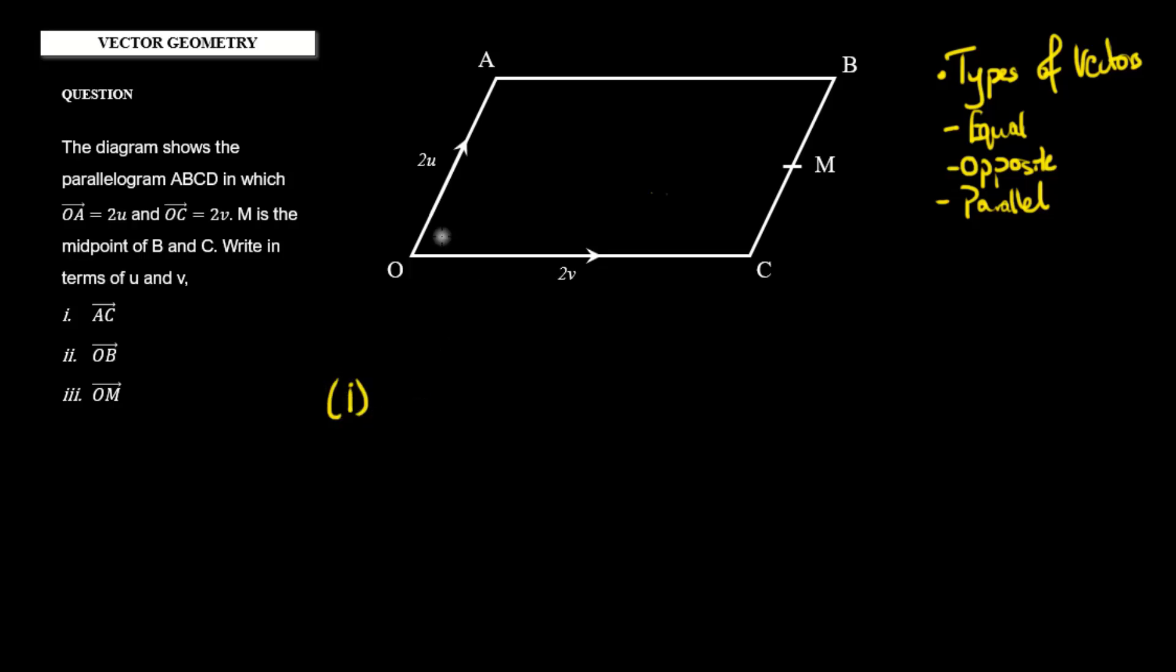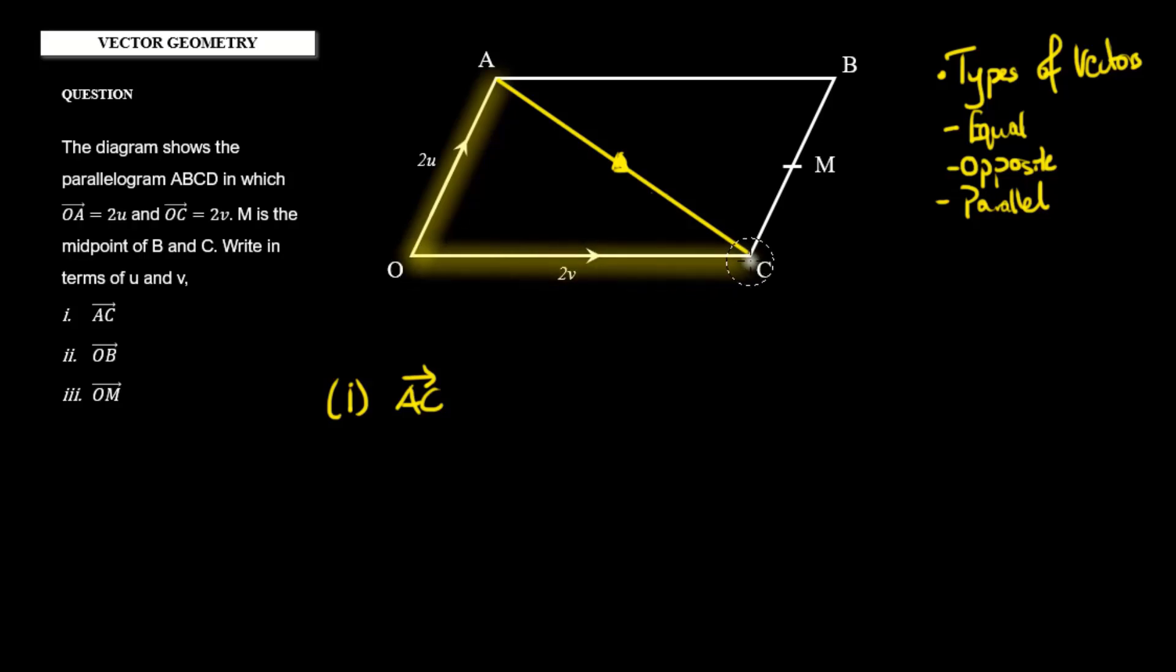So let's first start with AC, vector AC. The first thing we need to do is identify where vector AC is. So we're going from A to C, so it would be this vector that's formed right here. Now we can think about it using the same idea of travel. We want to get from A to C—we can't go there directly, so we can go around. We can probably travel this way that we know, and then we can go this way.